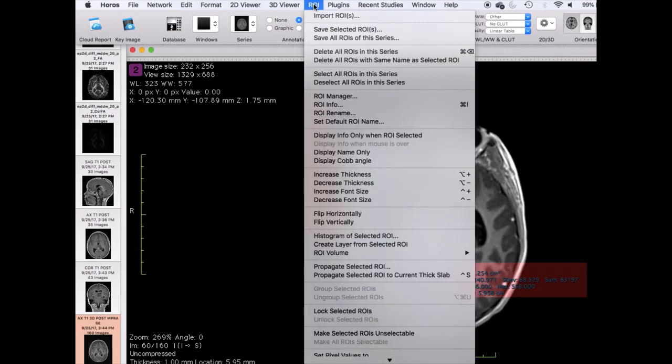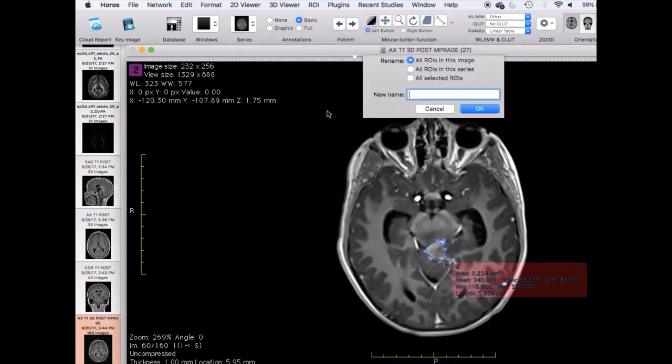After this, you will need to rename all ROIs to the same identifier. This can be done by selecting ROI, ROI rename, and selecting the bubble all ROIs in this series. Type in a name or number of your choosing.